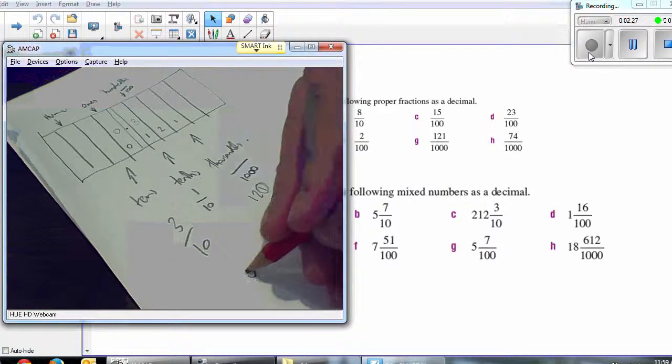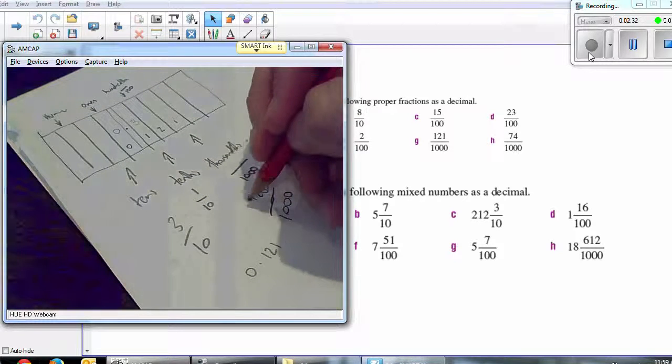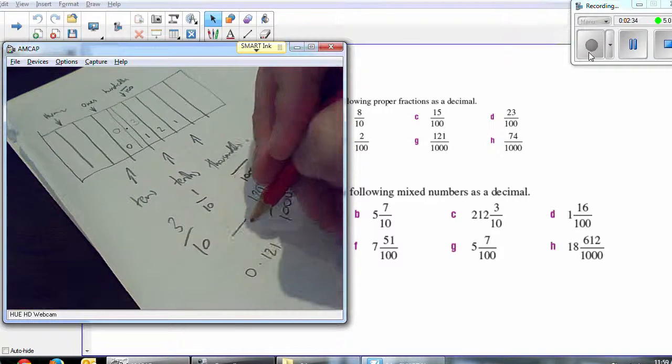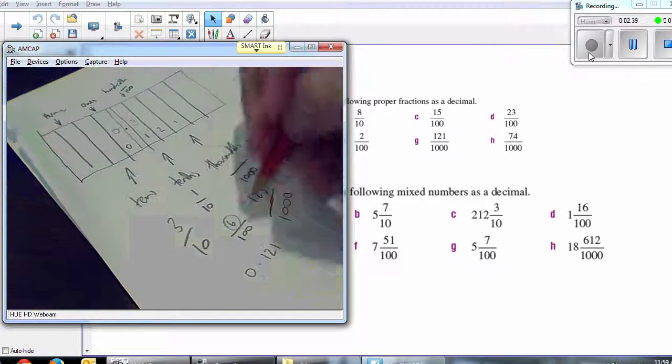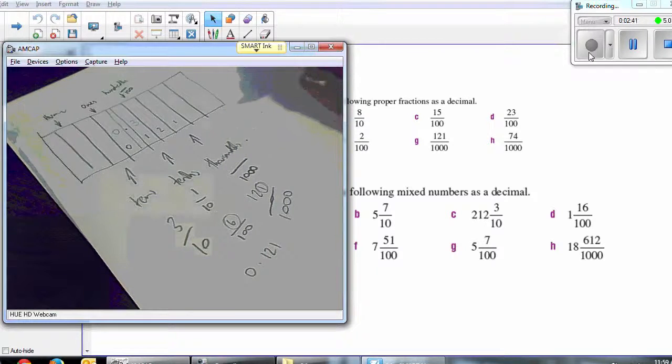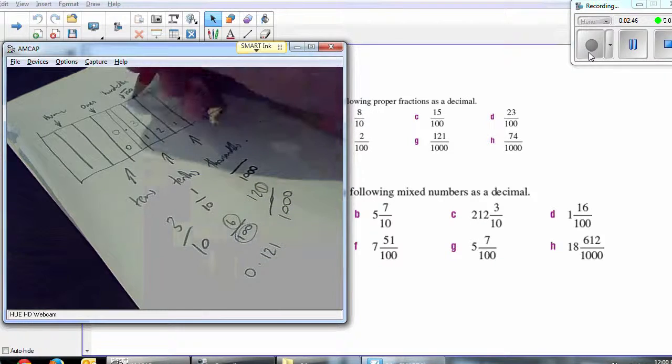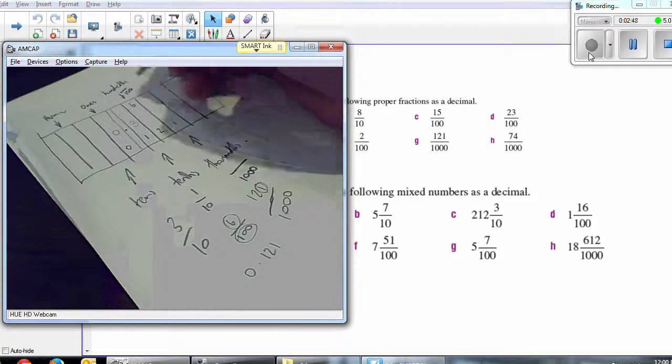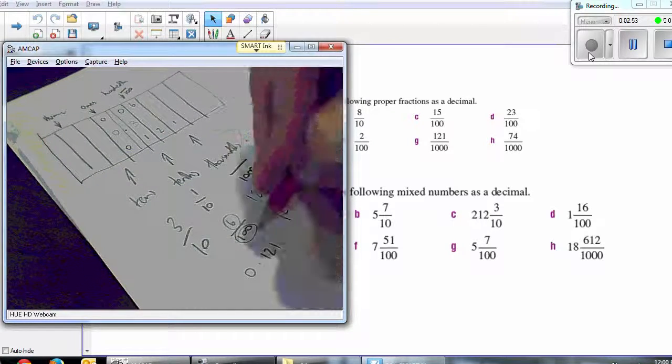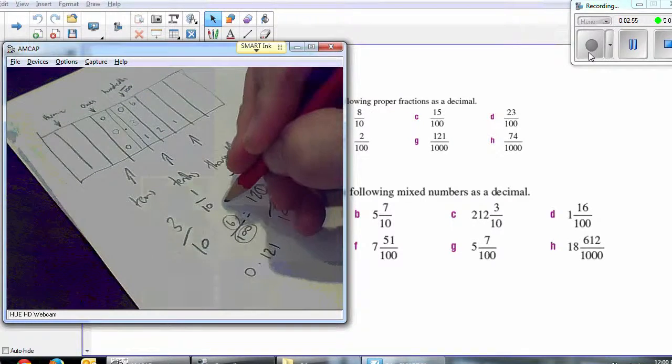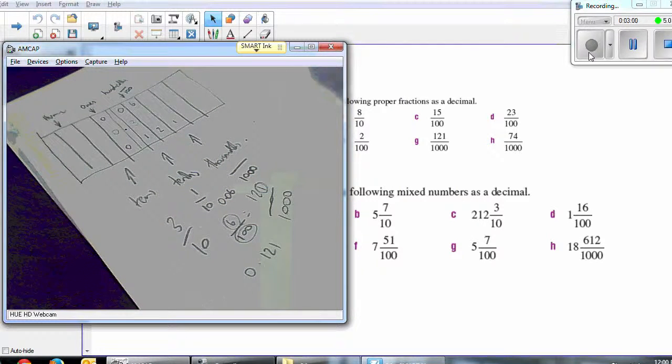If you have a situation like this, where you have six hundredths, once again, the very last digit—in this case, there's only one digit—but it still needs to go in this column. So I put the six there, there's a zero there because there's nothing here, and a zero there. So six hundredths would equal zero point zero six. Really important point.